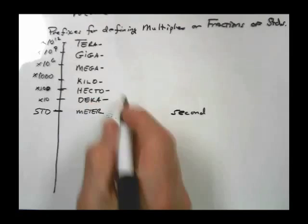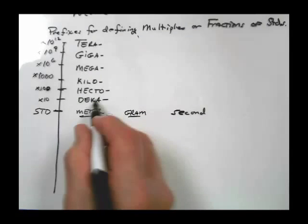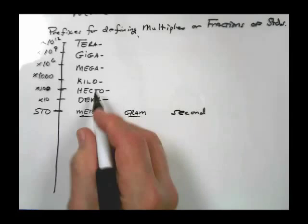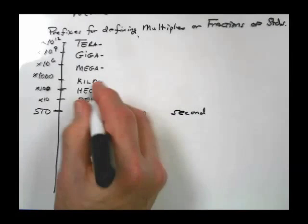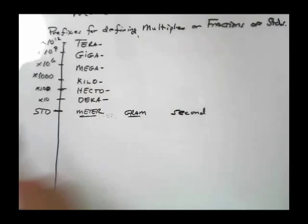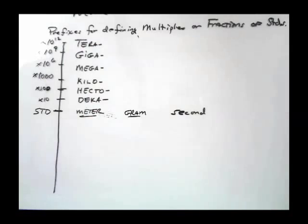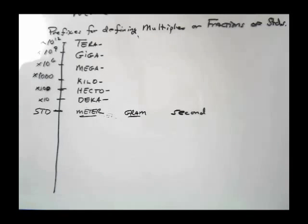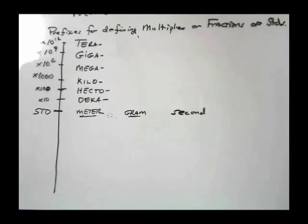That also applies to the gram. Decagram is ten grams, hectogram is a hundred grams, kilogram is a thousand grams — which is the standard — megagram is a million grams, giga is a billion, and tera is ten to the twelfth.